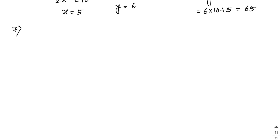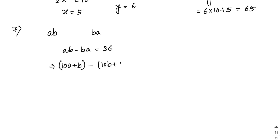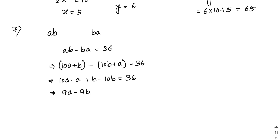Problem 7: If the difference of a two-digit number and the number obtained by reversing the digit is 36, find the difference between the digits. Let the number be ab and its reverse be ba. Then ab − ba = (10a + b) − (10b + a) = 9a − 9b = 36, so a − b = 4. The difference between the digits is 4.